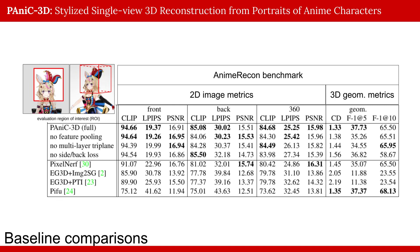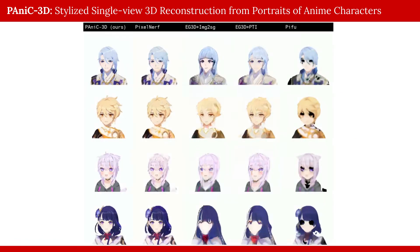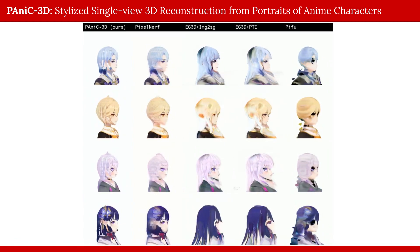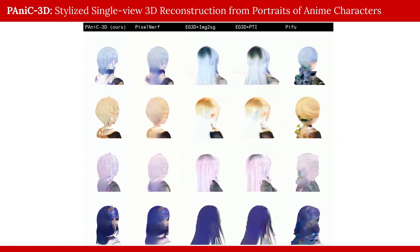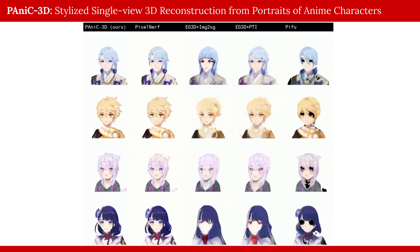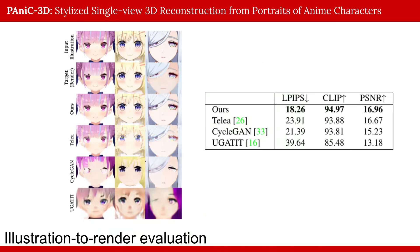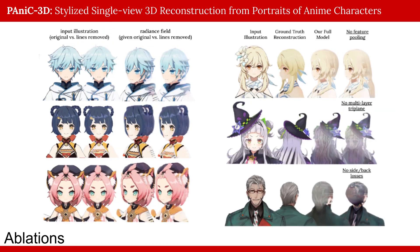We find that our proposed Panic3D system outperforms baseline reconstructors on Anime Recon metrics, and also generates qualitatively more appealing results due to our improved architectures. Here, illustrations with lines removed by our Illustration to Render module are fed to various reconstruction frameworks. Our Panic3D system delivers plausible reconstructions, while other methods struggle to preserve identity and predict reasonable geometry. Please refer to our paper for more detailed analysis, including evaluation of our Illustration to Render module against other unpaired image-to-image models, and ablations of model components such as feature pooling, multi-layer triplane, and auxiliary reconstruction losses.